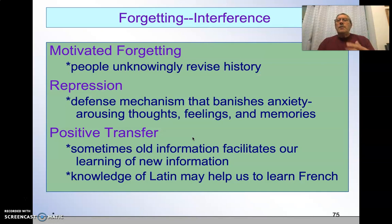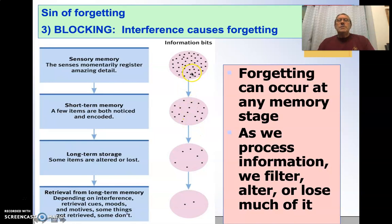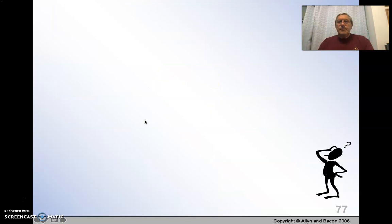The other aspects of interference involve motivational forgetting. Sometimes people have things they just don't want to remember, and they will revise history, so to speak. Other times, events are so anxiety-producing that we repress them, push them down into unawareness, and that causes us to forget. And sometimes old information facilitates the learning of new information — so if you studied Latin in high school, when you come to French in college, you're going to be better off because of that. So blocking and interference from other bits of information can happen at all those memory stages, and you can see that the information retained decreases over time.